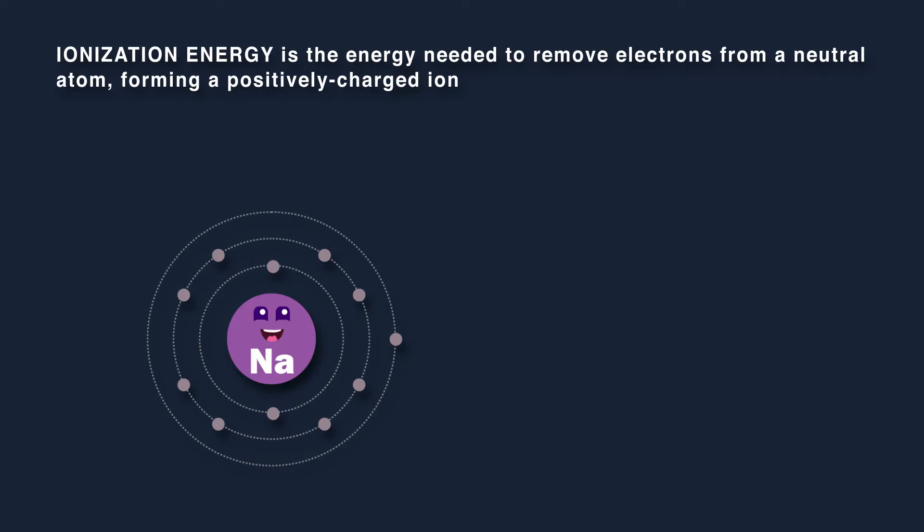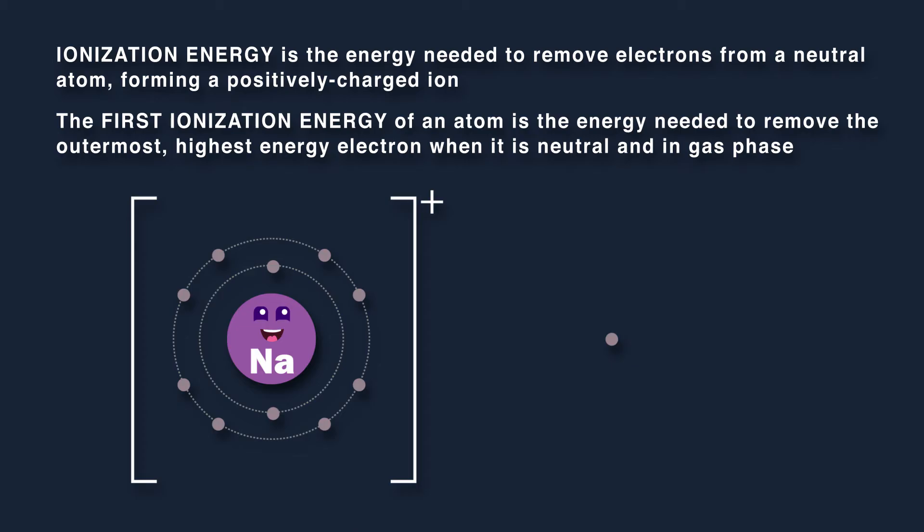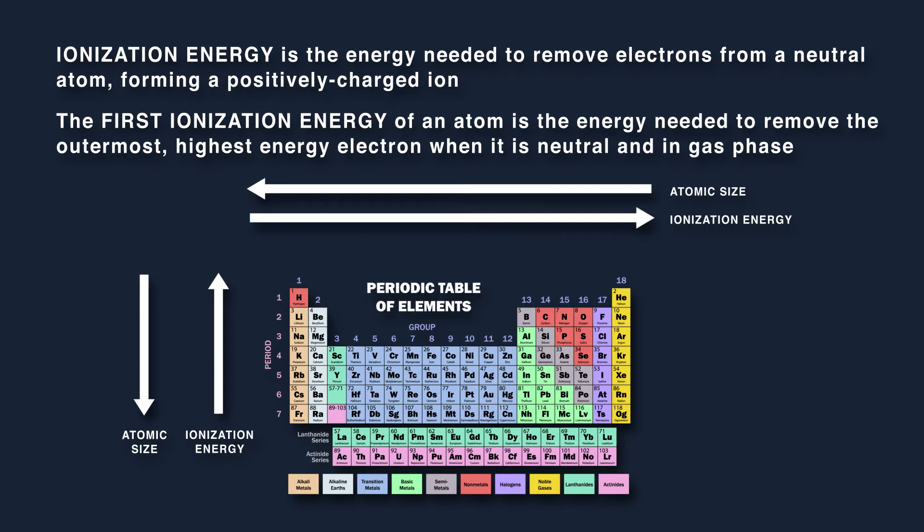Ionization energy is the energy needed to remove electrons from a neutral atom, forming a positively charged ion. The first ionization energy of an atom is the energy needed to remove the outermost, highest energy electron when it is neutral and in gas phase. Note that this ionization energy is inversely proportional to atomic size.